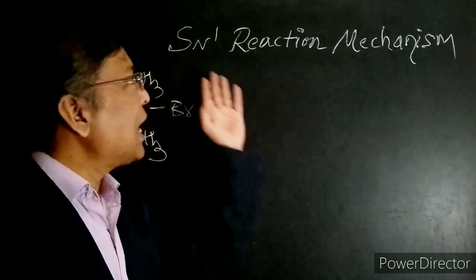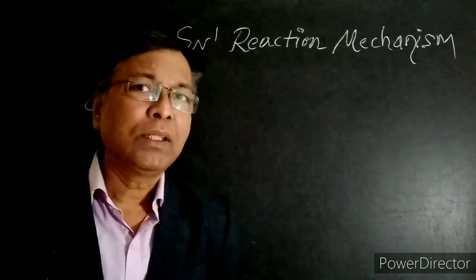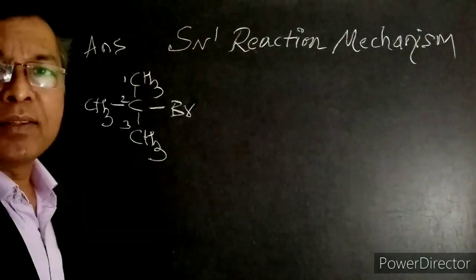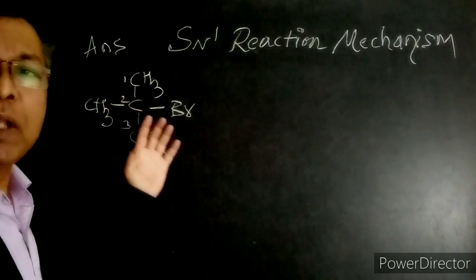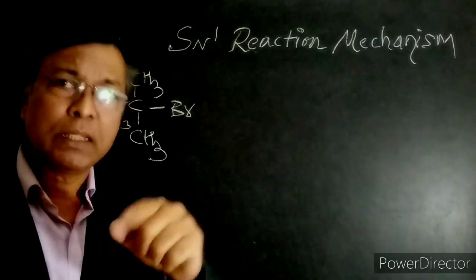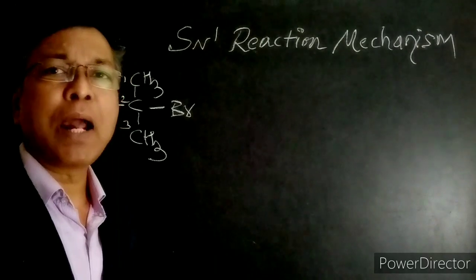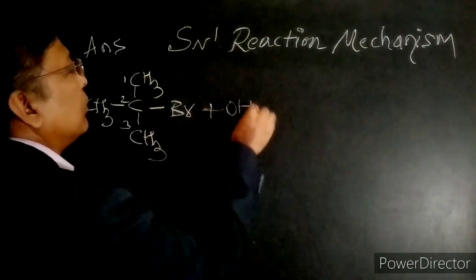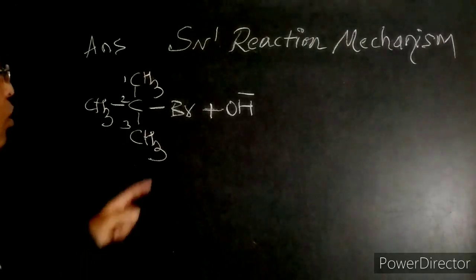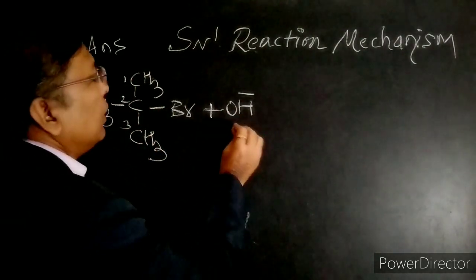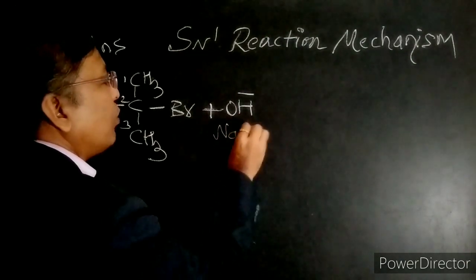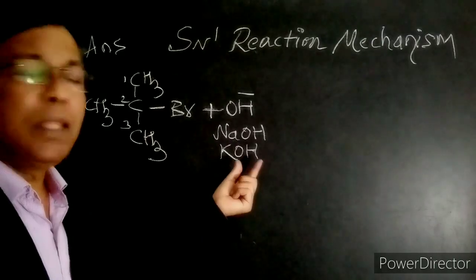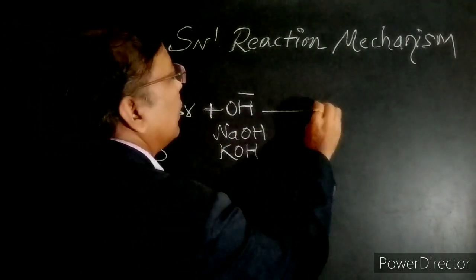I will give you the technique of answering SN1 reaction mechanism step by step. Take pen and paper and follow along. First point: alkaline hydrolysis of tertiary butyl bromide undergoes SN1 reaction mechanism. Write the reaction — tertiary butyl bromide (or 2-bromo-2-methylpropane) reacts with a nucleophile obtained from NaOH or KOH.